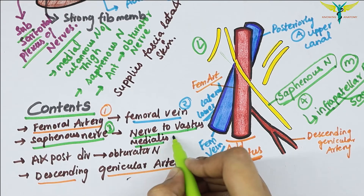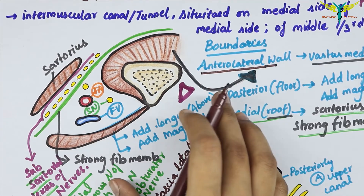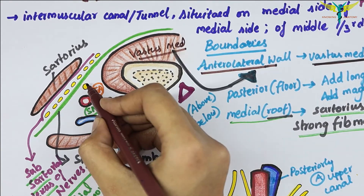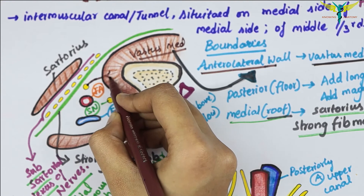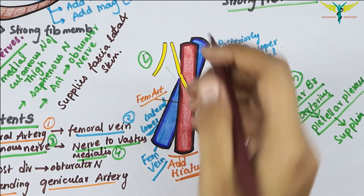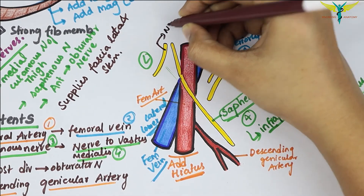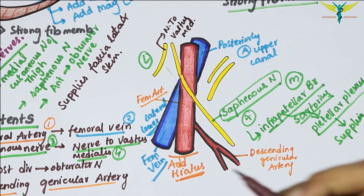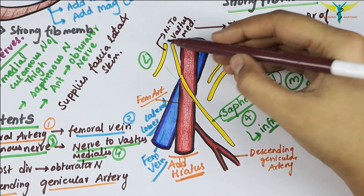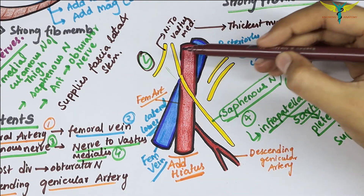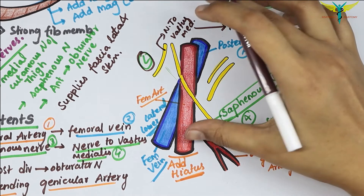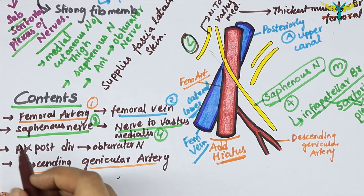The nerve to the vastus medialis is the thickest muscular branch of the femoral nerve. It lies laterally to the femoral artery and enters the vastus medialis in the upper part of the canal. The anterolateral wall of the canal is formed by the vastus medialis muscle, which this nerve supplies.